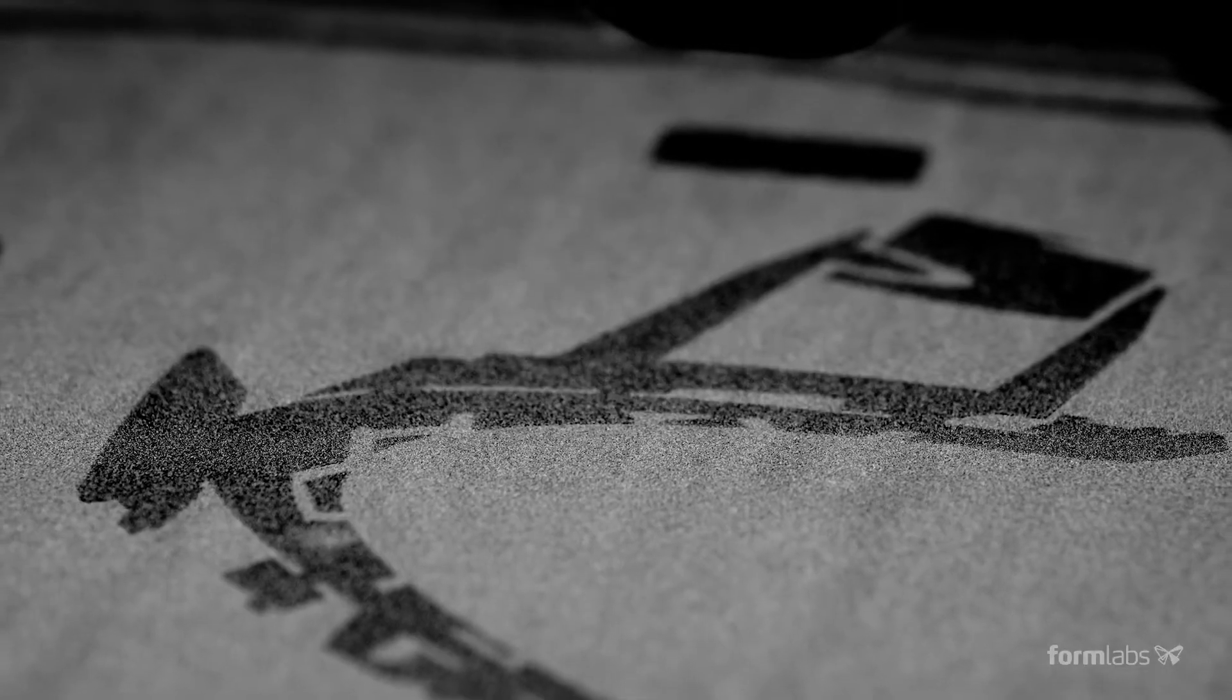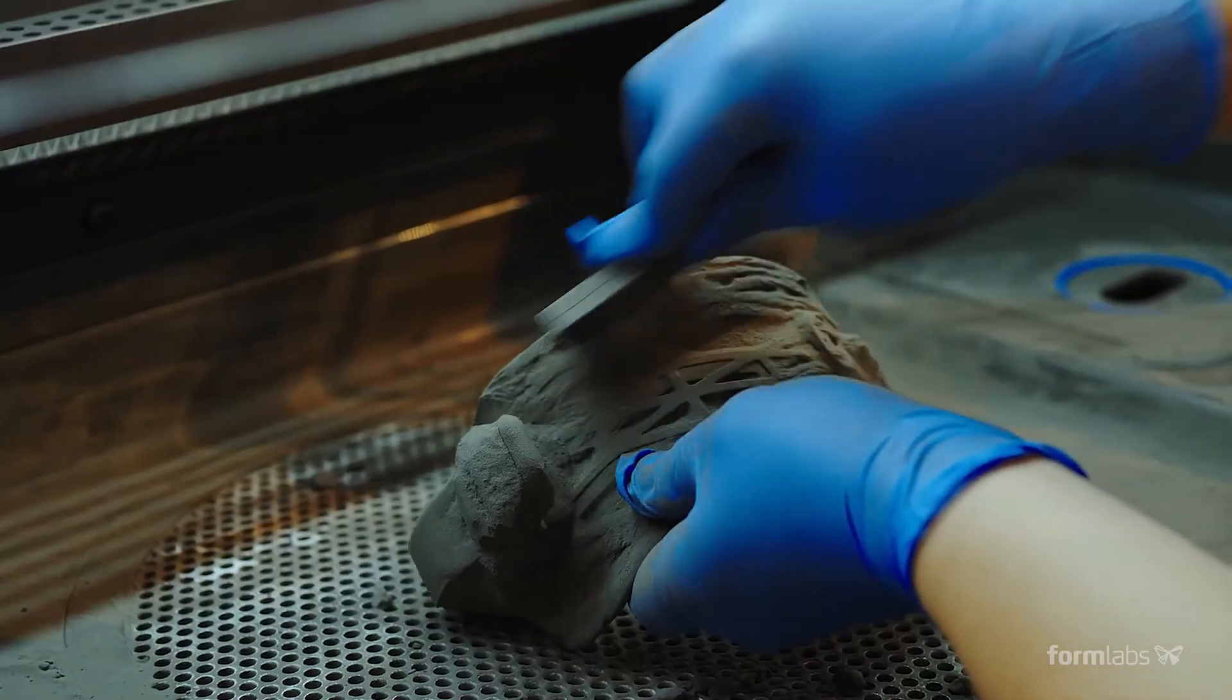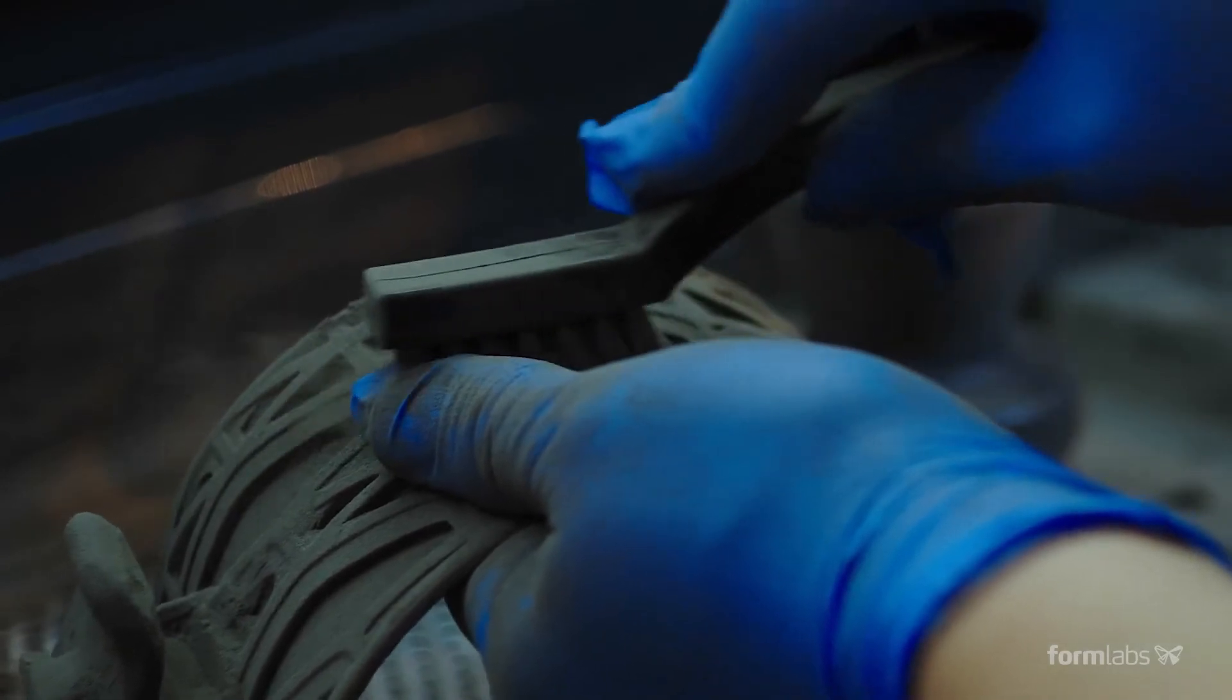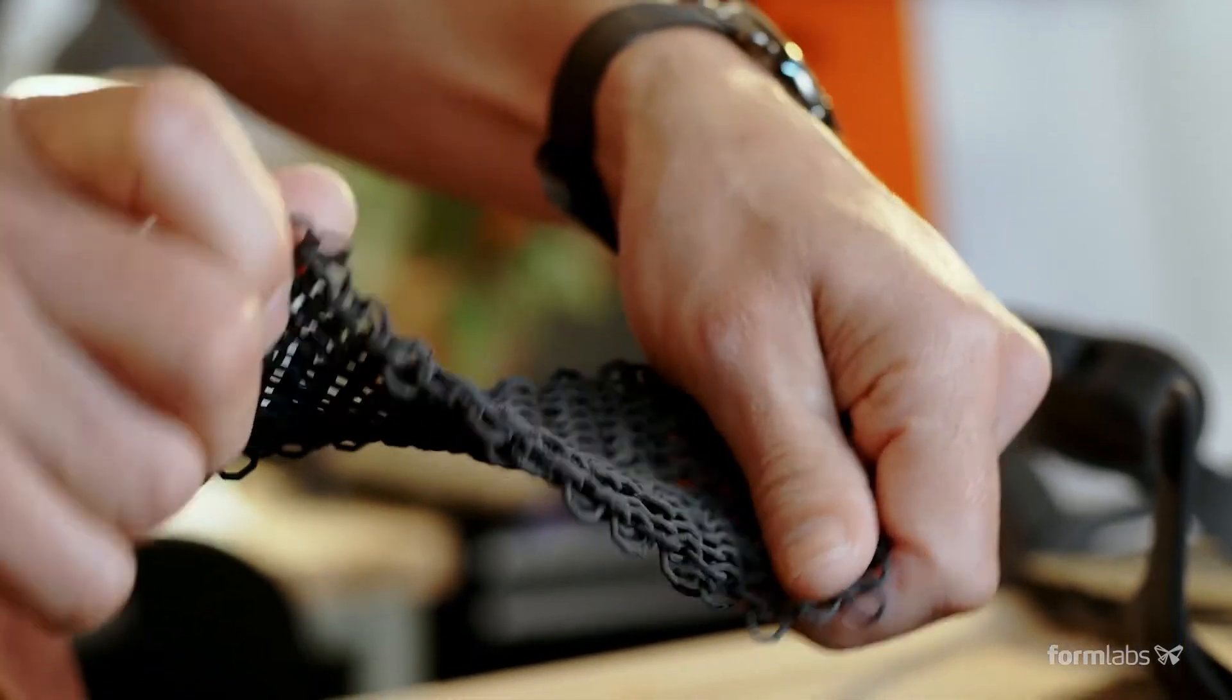SLS 3D printing fuses nylon powder layer by layer. The unused powder supports the parts during printing so you can create complex interconnecting designs with no need for support structures.